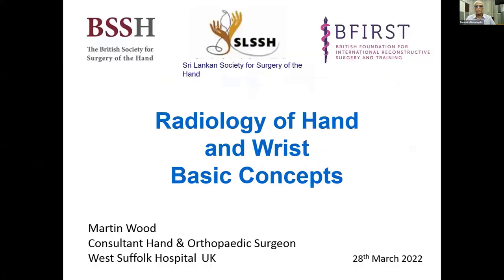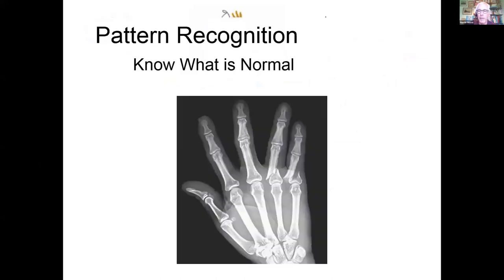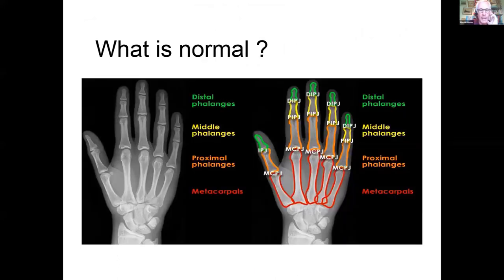To kick it off, I'm going to start with a few comments about some of the basic concepts you might think about when looking at x-rays of the hands and wrist. Essentially, when we look at x-rays, we're indulging in a process of pattern recognition. We look at an x-ray, we recognise what it should be like — so we need to know what's normal — and then we identify what's different from normal. To know what's normal, you have to know your anatomy. You can't interpret any sort of imaging unless you have a really good knowledge of what the anatomy of the hand and wrist is supposed to look like.